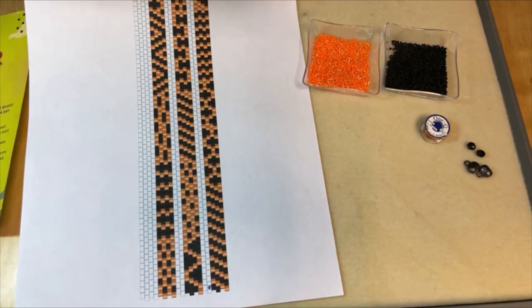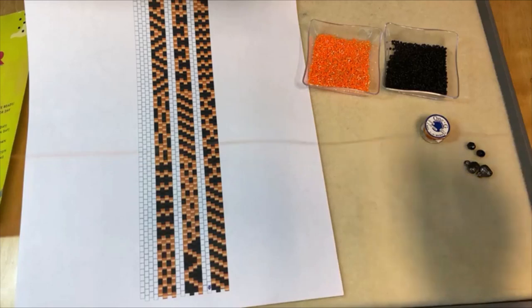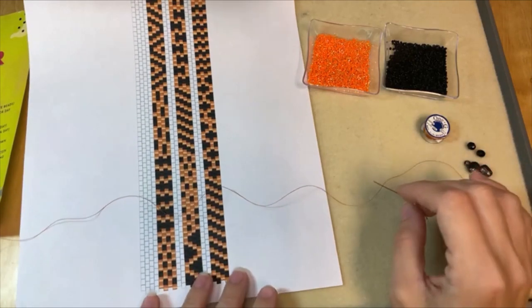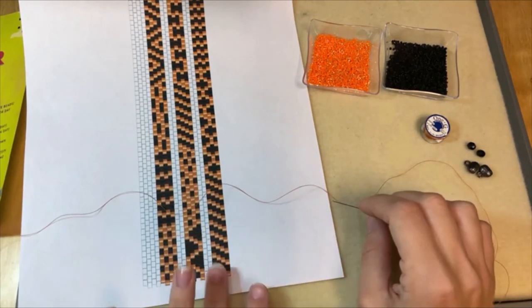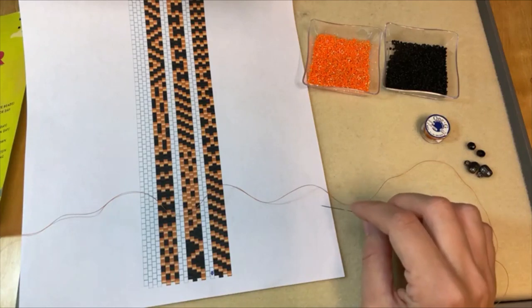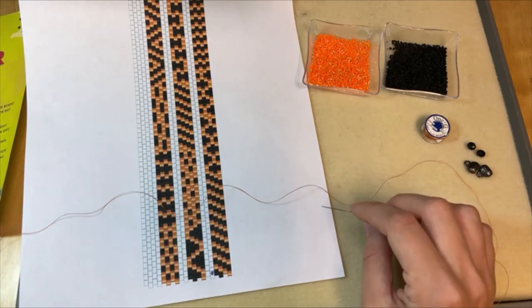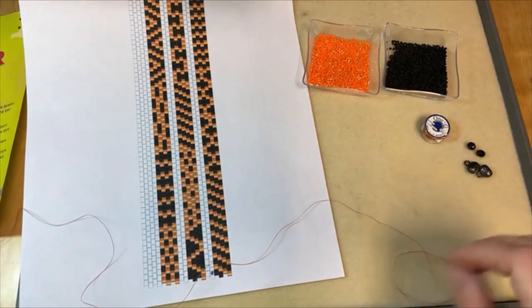We're just getting into making some peyote stitch Halloween wrap bracelets. So this is only four beads wide so it's an even count peyote stitch and that's a really easy stitch to start with because you don't have to do any special turns or anything.